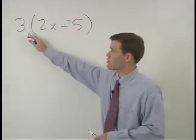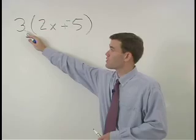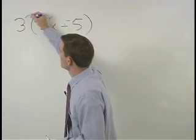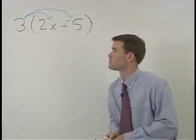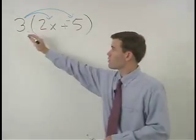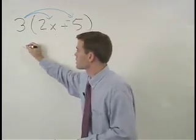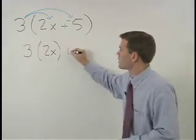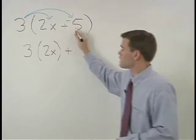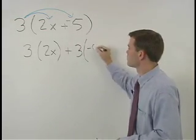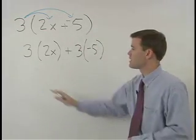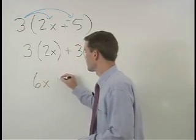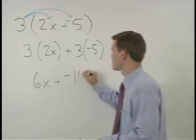Now we can distribute, or multiply, this 3 times each of the terms inside the set of parentheses. So we get 3 times 2x plus 3 times negative 5. And this simplifies to 6x plus negative 15.